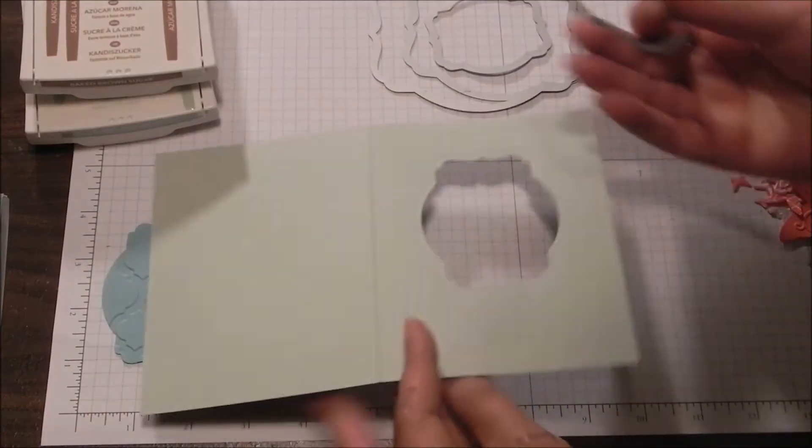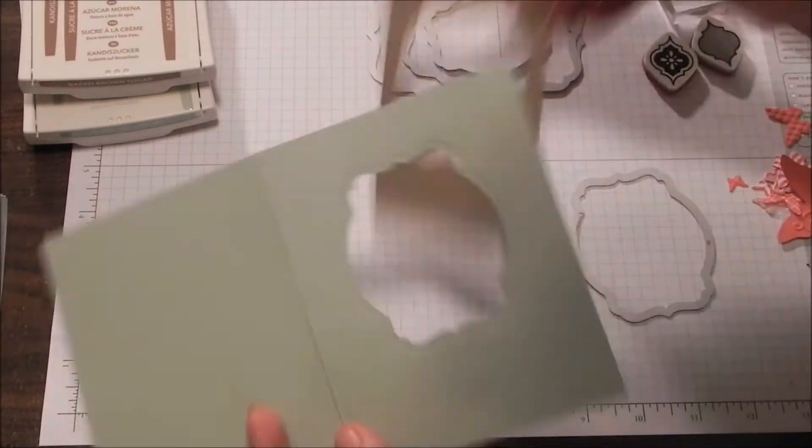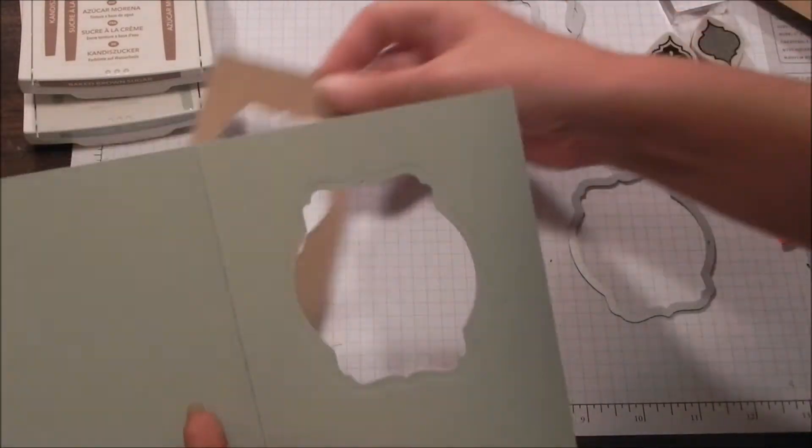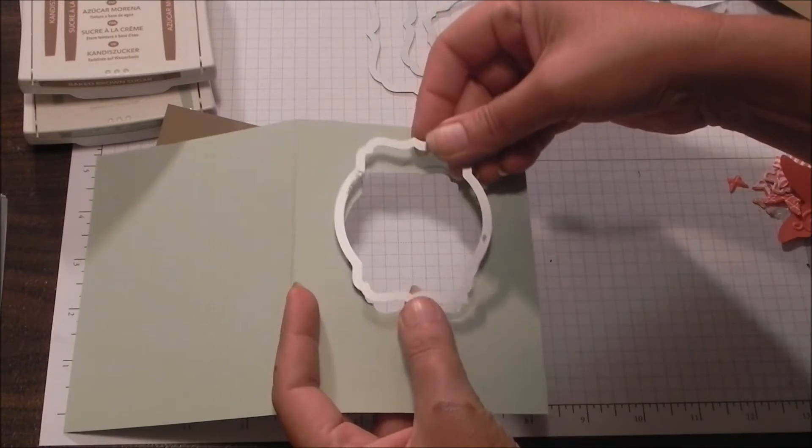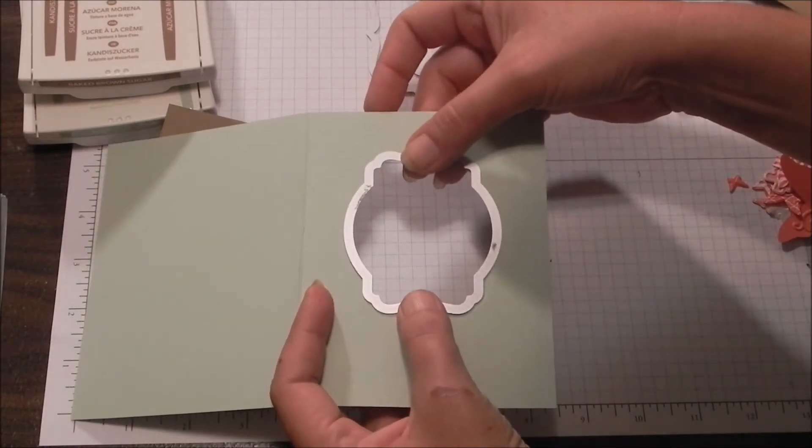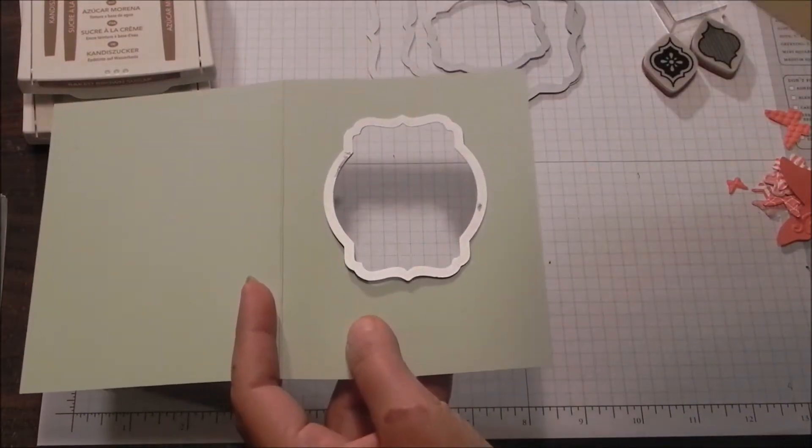Now I'm going to come back and I want to do the panel that goes in the front, which ultimately will look like this. So the easiest way to do that, if you place the same framelit back into this spot, it actually wants to stay exactly where it needs to be.